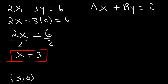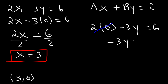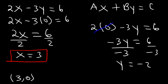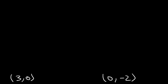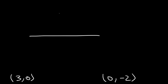Now let's find the y-intercept — replace x with 0. Two times 0 is nothing, so we have negative 3y equals 6. Divide both sides by negative 3: 6 divided by negative 3 is negative 2. So that's the y-intercept, and we have the point (0, −2). Now we can make the graph: the x-intercept is at x equals 3 on the x-axis, and the y-intercept is at negative 2 on the y-axis.